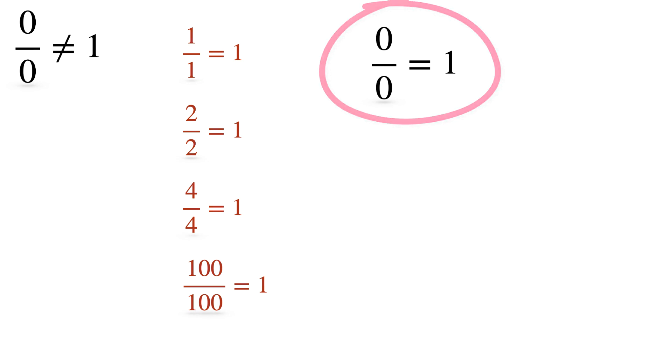Moreover, if we reverse the process, we find that 1 into 0 which is equal to 0, which again gives a strong case to believe that 0 by 0 equals 1. But let us think this broadly.